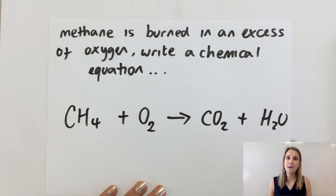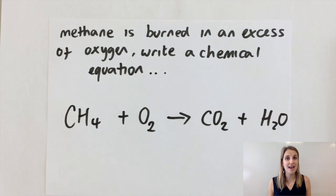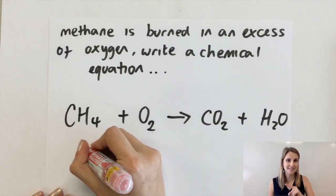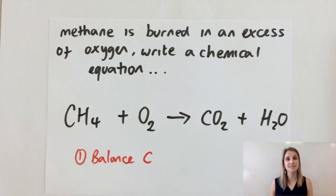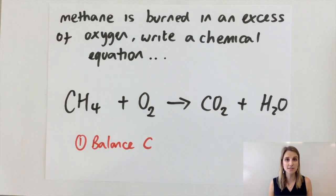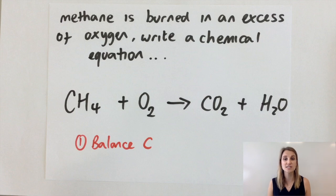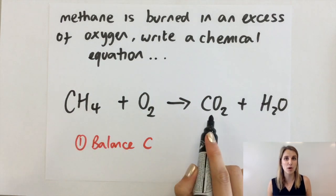Now if you're going to balance a combustion equation you want to balance the elements that only appear in one place on each side first. So I recommend that we balance the carbons first and if we look at the carbons on both sides you can see they're the same they both got one.